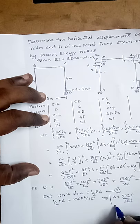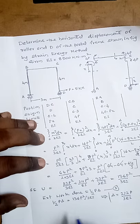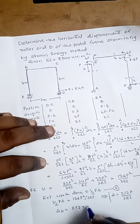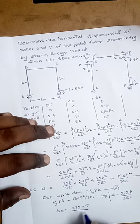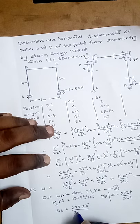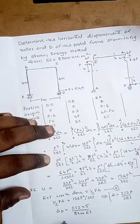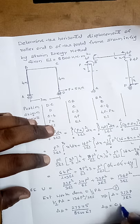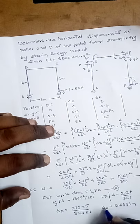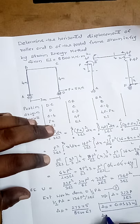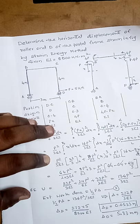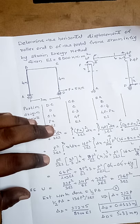This is the deflection at the roller end D. Substituting P = 5 kN and EI = 8500 kNm²: δ_D = 272×5 / (3×8500), which gives δ_D = 0.0533 meters, or δ_D = 5.33 millimeters. This is the solution for the given problem. We will continue in the next video class.